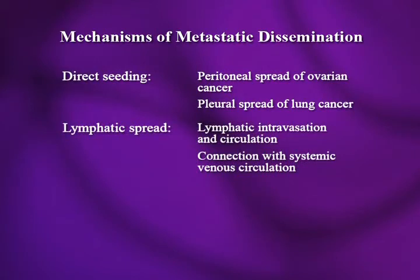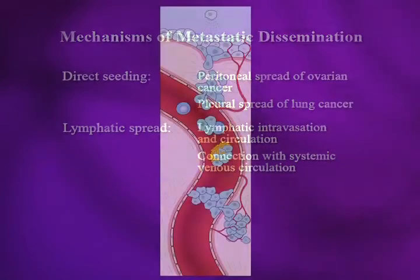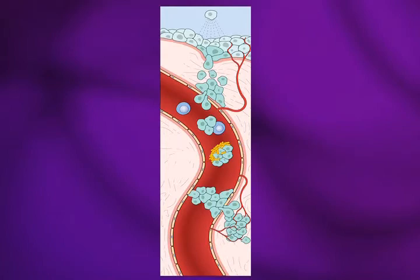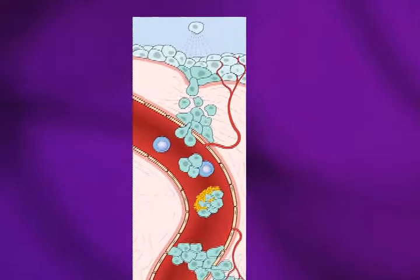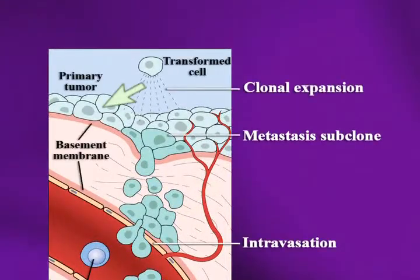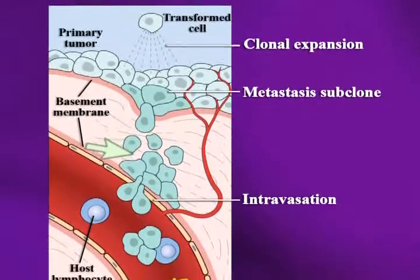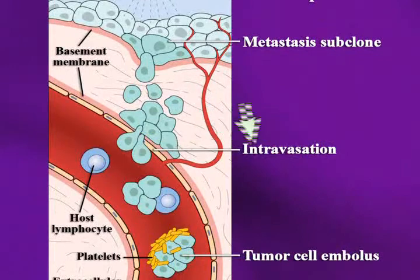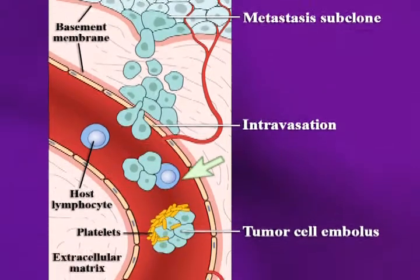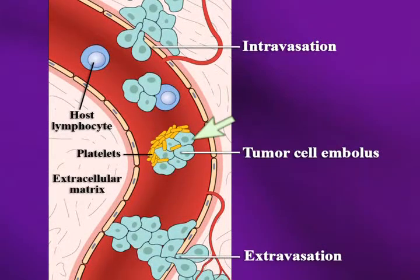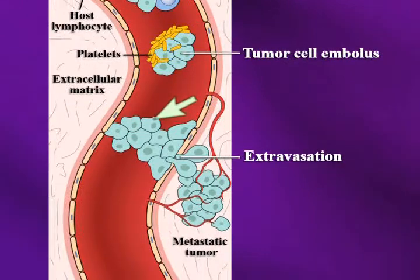The first form of spread would be lymphatic or vascular invasion, where cells get into the circulation. The primary tumor is sitting outside some basement membrane, having developed its own blood supply. These transformed cells break through and get into a vessel — this is called intravasation. They then circulate, and lymphocytes and platelets clump the tumor cells together until they get large enough to form a tumor cell jam somewhere. Then they extravasate — exit the vessel — and begin to form a metastatic tumor, calling in their own blood supply.